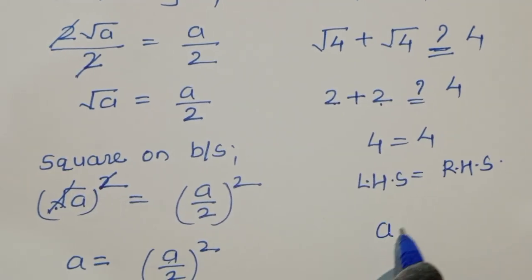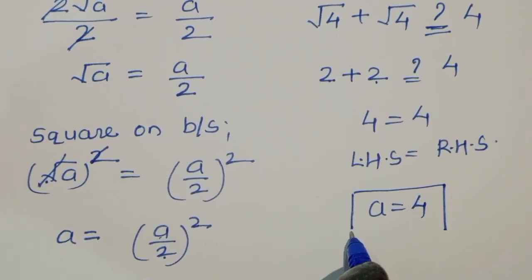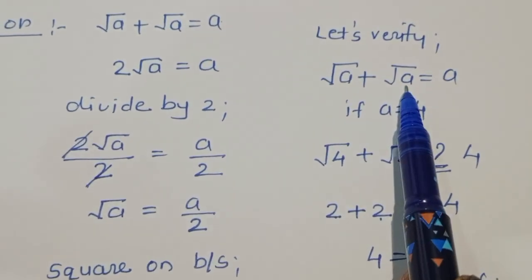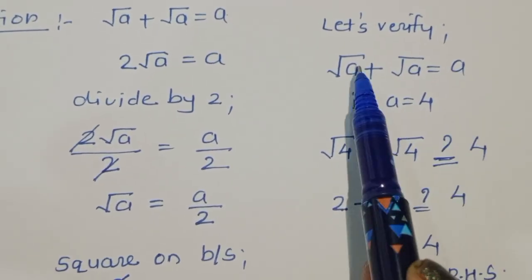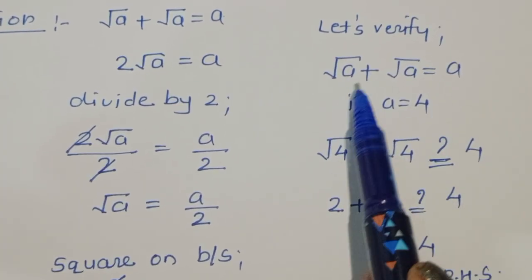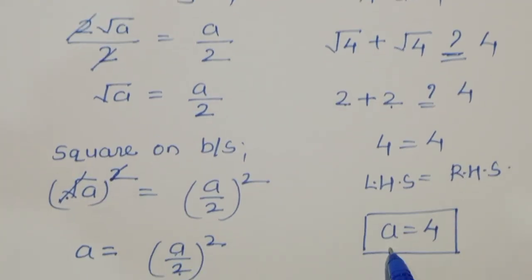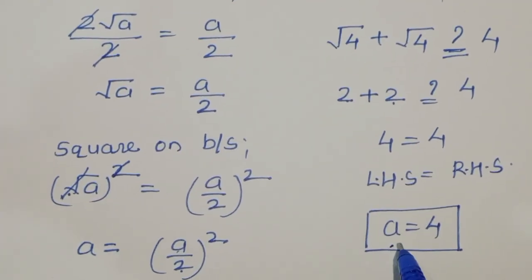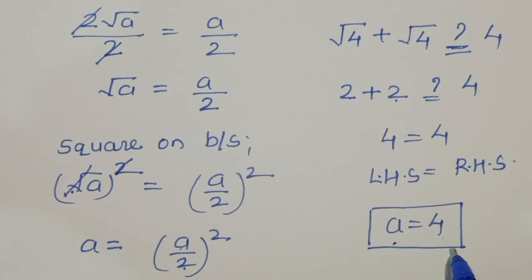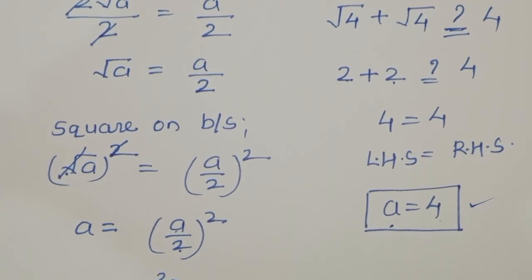LHS equals RHS, so a equals 4 is a correct solution. If we take a equals 0: square root of 0 plus square root of 0 equals 0, which also gives LHS equals RHS. So we have two values: a₁ equals 0 and a₂ equals 4. Both are correct solutions — this is verified. Thank you.